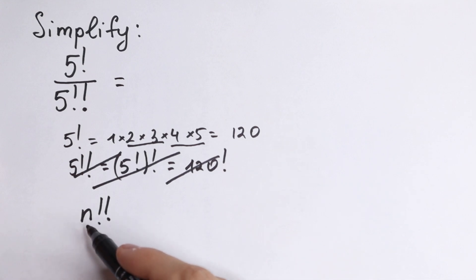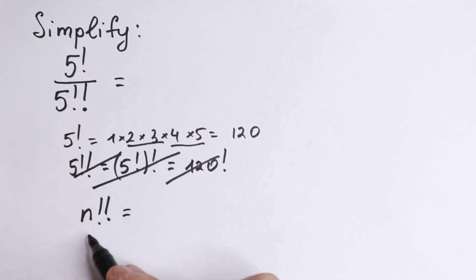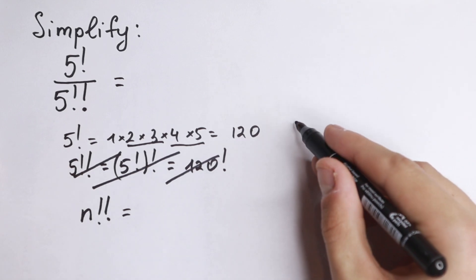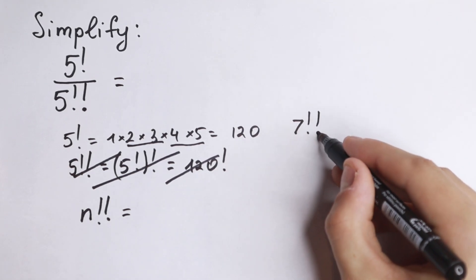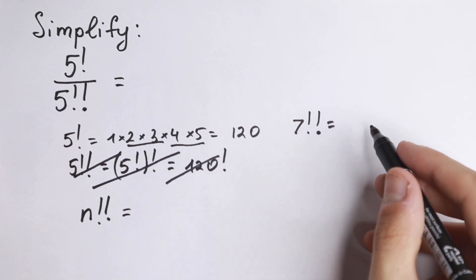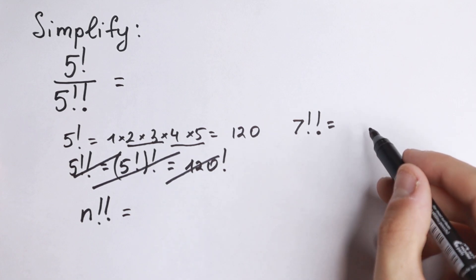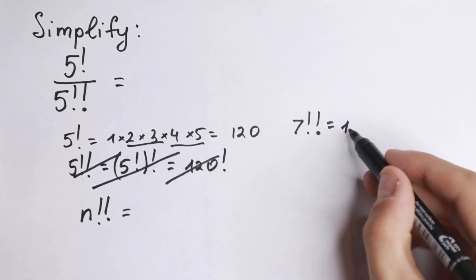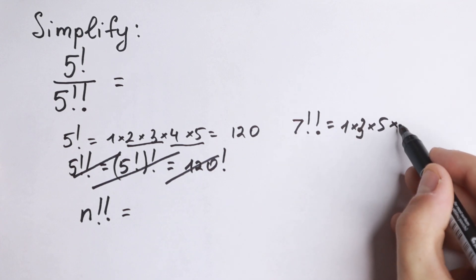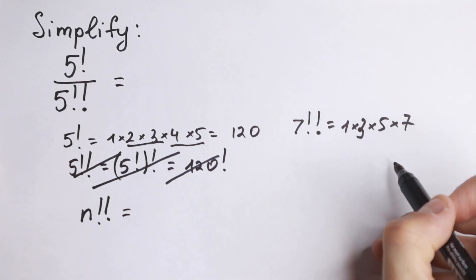For example, if n is an odd number, then we multiply only all odd numbers up to n. Take a look — for example, we have 7 with double factorial sign. Since 7 is odd, we go up to 7 using only odd numbers: 1 times 3 times 5 times 7. As you can see, it goes only through odd numbers.